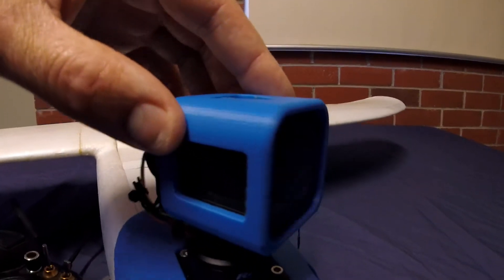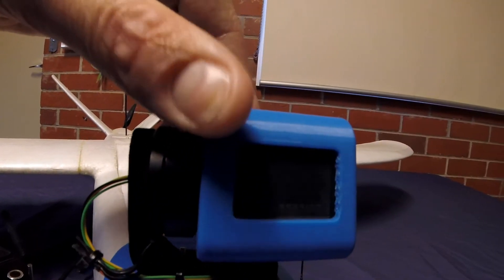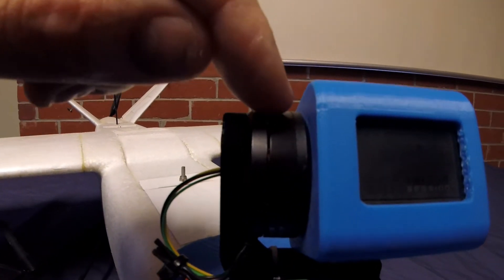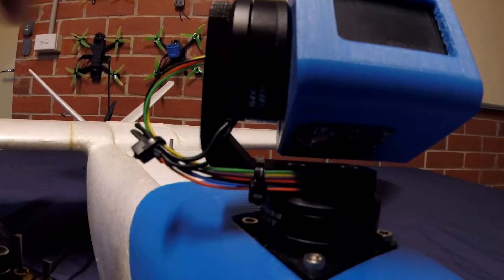This blue piece here is a holder for the GoPro Session. That attaches to the roll motor. Then the two motors are joined together using an L-shaped bracket.